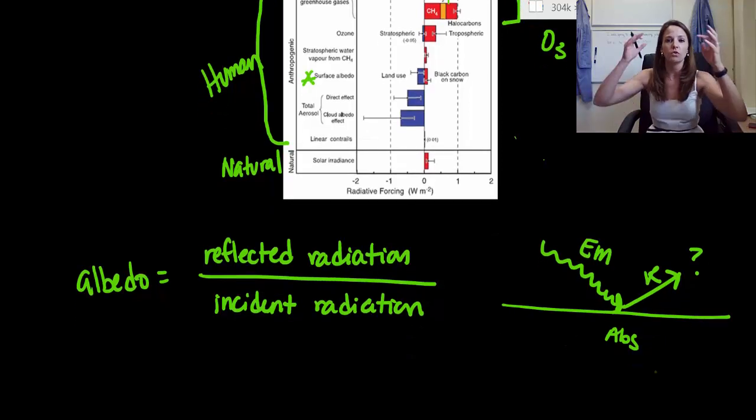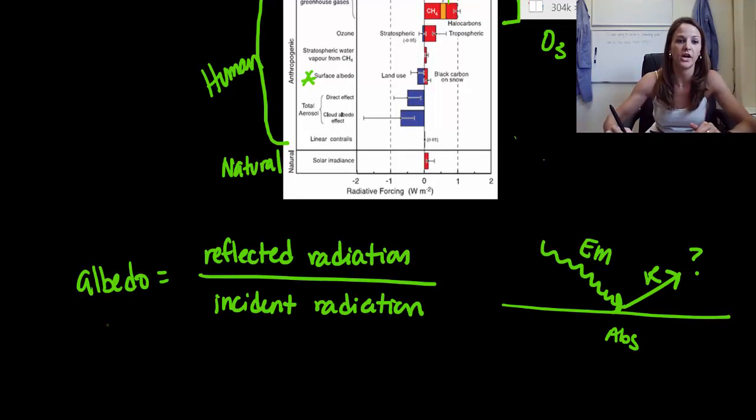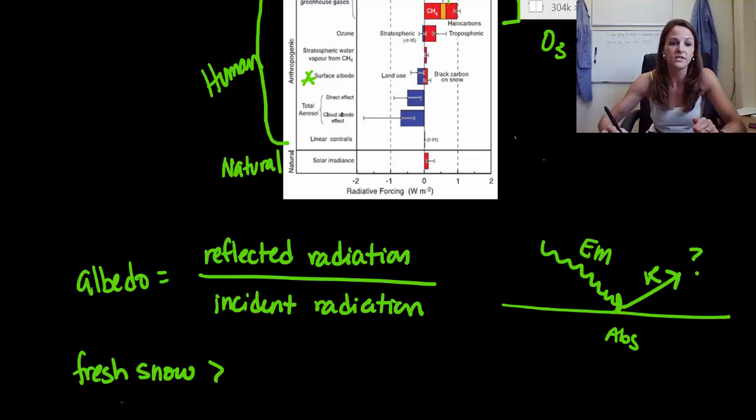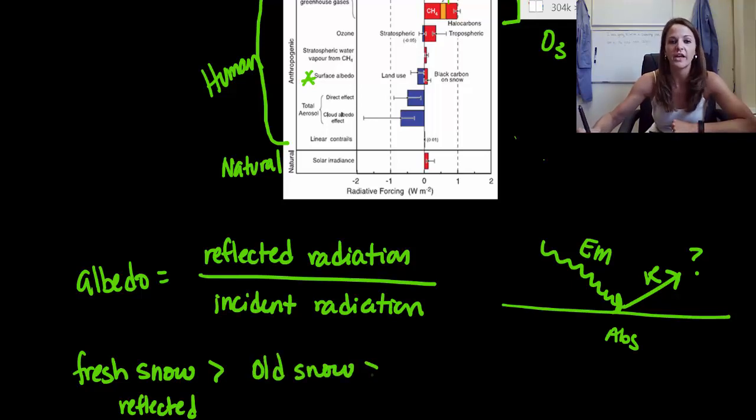So just to give you kind of a ratio or a way to put this in your head or a benchmark for your head, something like fresh snow is going to reflect a lot of incoming radiation. So this is going to have a high reflection, which means it's also going to have a high albedo. So this has values of around 0.8 and 0.9. So then something with a little bit less than that or a smaller albedo is going to be something like old snow. So mushy snow, it's not as white, it's not going to be able to reflect as much of that radiation.